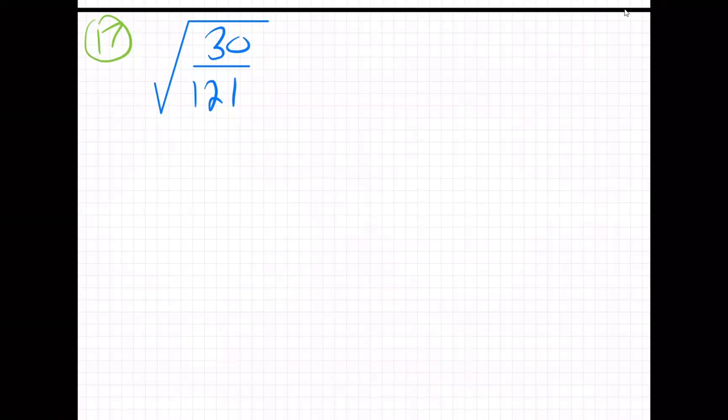On this question, we need to simplify the square root. If we could divide these by anything we would, but we can't. This is divisible by 2, but this is not. And this is divisible by 3, but this is also not. So we can't reduce it.